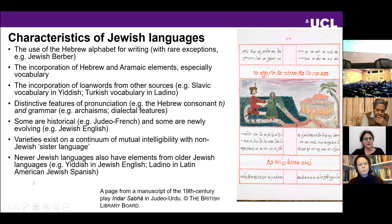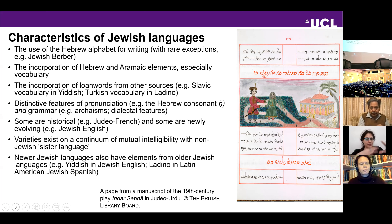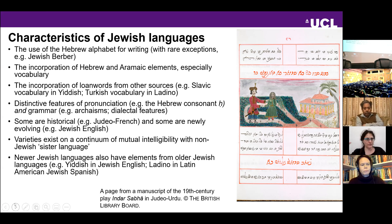Newer Jewish languages often have elements from older Jewish languages. Jewish English has a lot of Yiddish in it, and Latin American Jewish Spanish has some Ladino in it. So there's a mosaic of different historical varieties of Jewish languages.